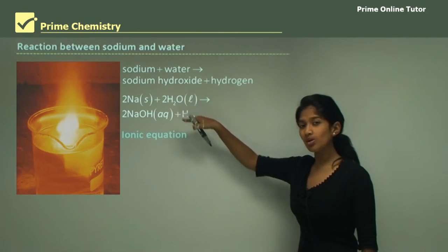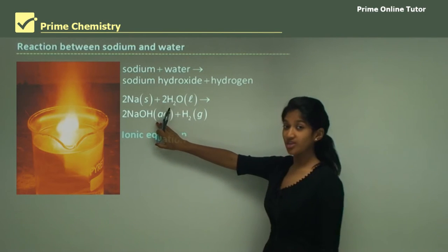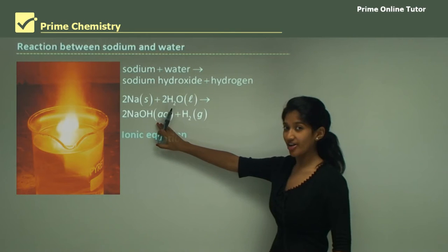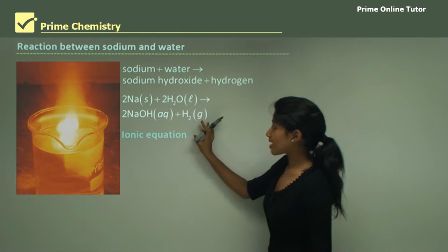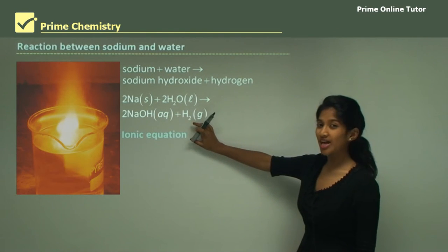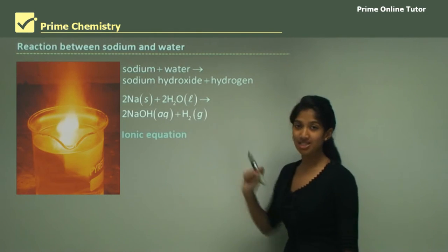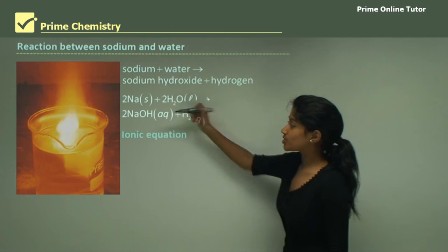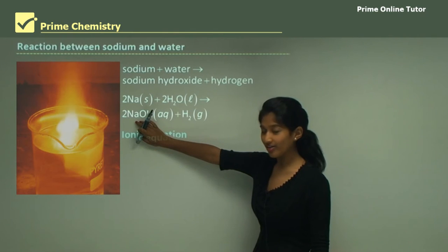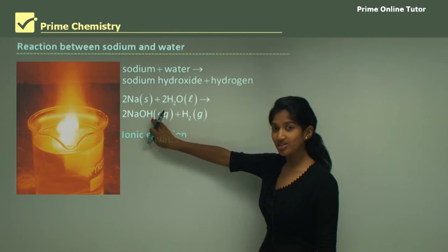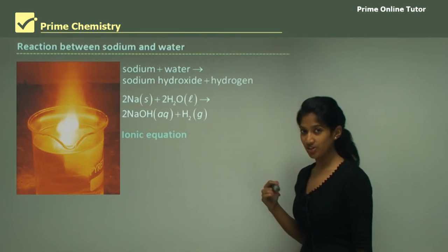Water is just written as water — it's not an ionic particle. But sodium hydroxide has an ionic bond between the sodium and the OH ion. Hydrogen gas has only a covalent bond between the two hydrogens. So only sodium hydroxide has an ionic bond, meaning when writing the ionic equation you split it into two ions: sodium is your cation and hydroxide ion is your anion — negatively charged while sodium is positively charged.